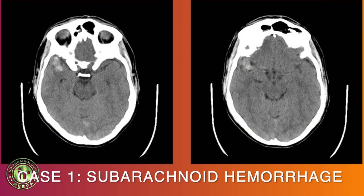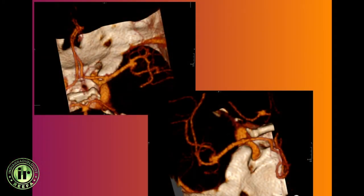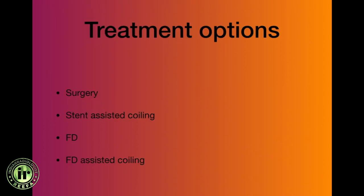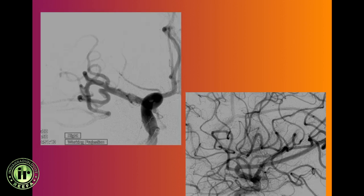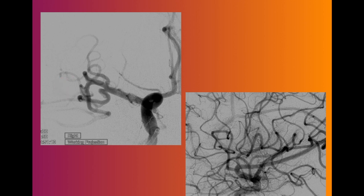Here is a grade one subarachnoid hemorrhage with a small hemorrhage caused by a blister aneurysm at the MCA bifurcation — not an easy case, different options can be considered. The 3D imaging shows the blister aneurysm on the middle cerebral artery inferior branch, and the plan was to drop a stent across and always put coils in the aneurysm.